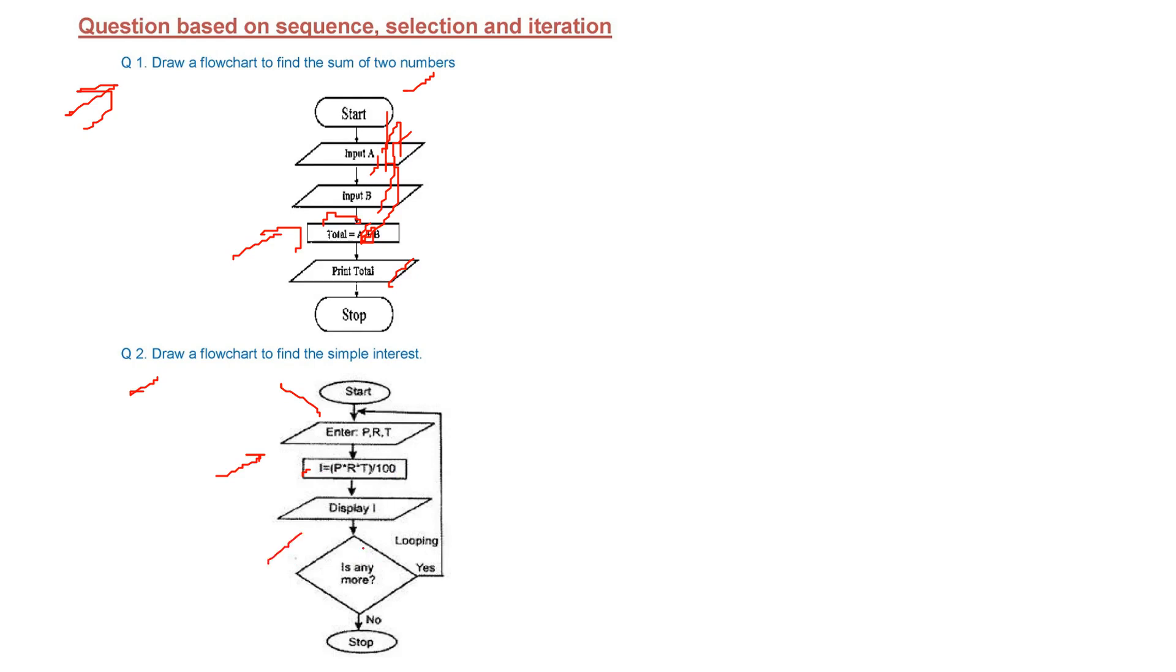Then we need to display it. And if the user requires more, that is we have a decision control here, means yes or no is the possibility. For that we use a symbol which is diamond. So yes, we go back again, do this again, check for yes and no again. If it is no, we stop.